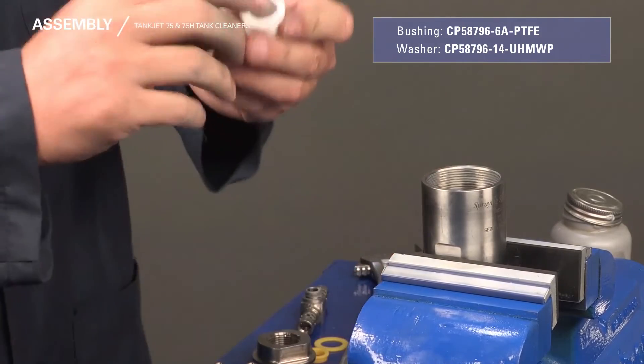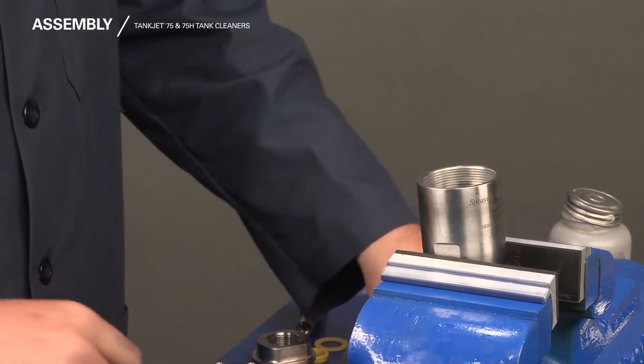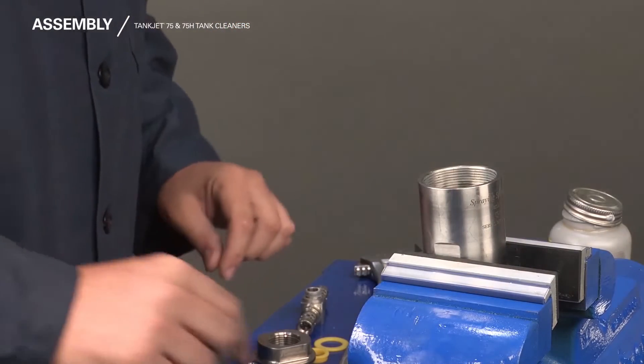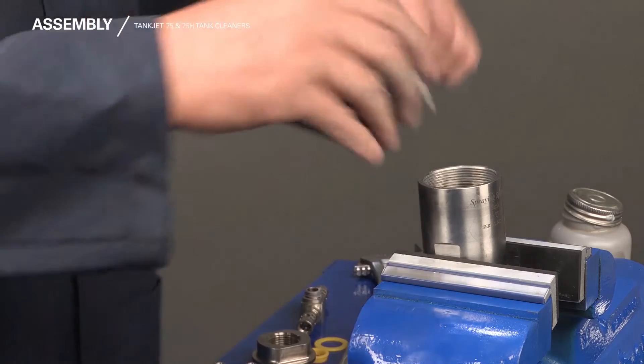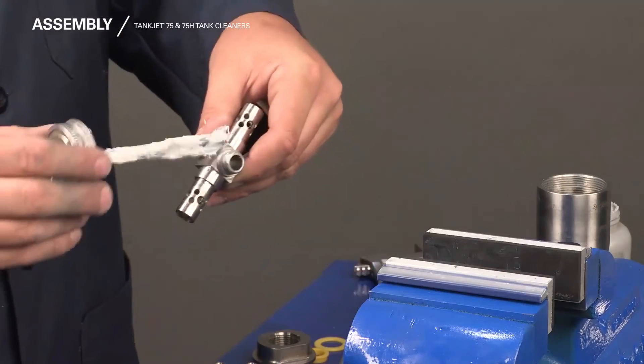Next, replace the bushing and then the washer. Insert the vertical shaft and thread onto the elbow shaft. Apply anti-seize.